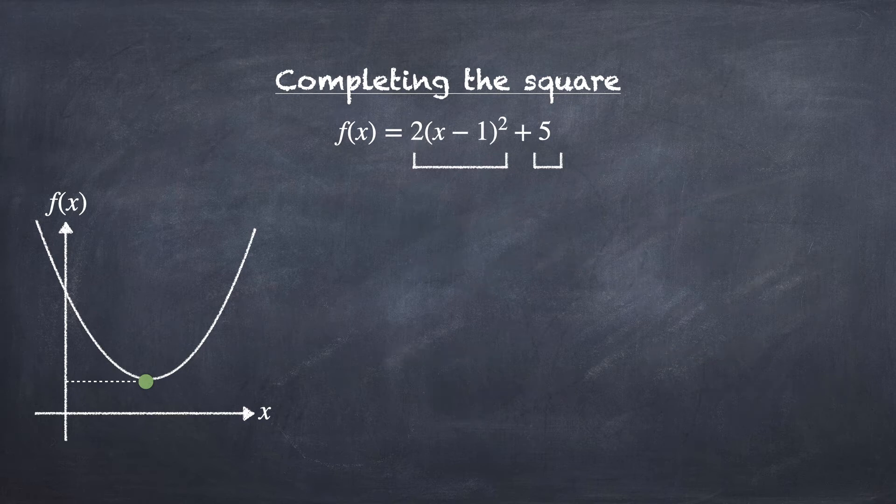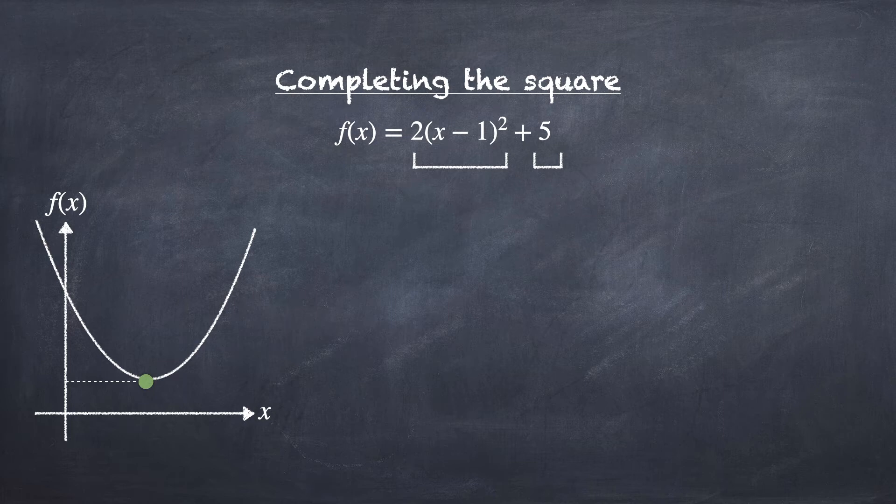Remember when the quadratic function is in completing the square form, it has two parts. The first part is something squared while the second part is a constant. To find the minimum value, we need to make both parts as small as possible.